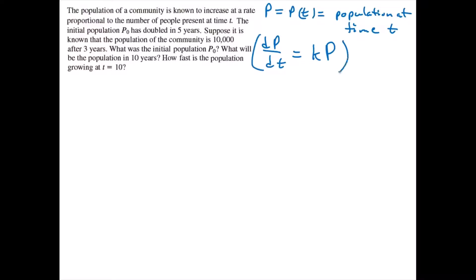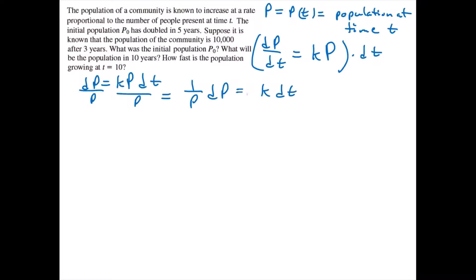We'll first multiply both sides by dt, giving us dp equals kp dt. Then we'll divide both sides by p, giving us 1 over p dp equals k dt. Now we can integrate both sides. The integral of 1 over p with respect to p will be the natural logarithm of the absolute value of p, and the integral of k with respect to t will be kt plus c.